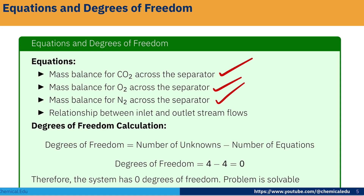So we have four equations total. The degree of freedom is the number of unknowns minus the number of equations: four minus four equals zero. Therefore the system has zero degrees of freedom, which means this problem is solvable. Thank you.